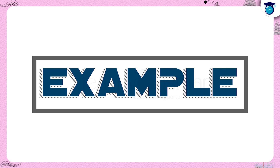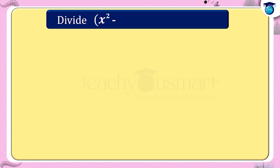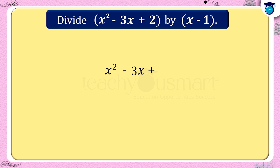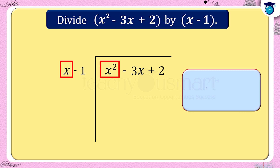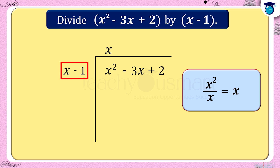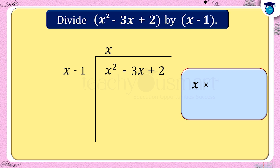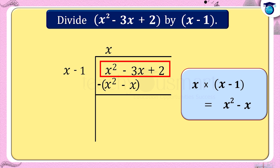Let's see an example where the remainder equals 0. Divide x² - 3x + 2 by x - 1. Divide the first term of the dividend, x², by the first term of the divisor, x. That is x² ÷ x = x, which is the first term of the quotient. Multiply this quotient by each term of the divisor x - 1: x × (x - 1) = x² - x. Subtract this product from the dividend x² - 3x + 2. We get the remainder as -2x + 2.